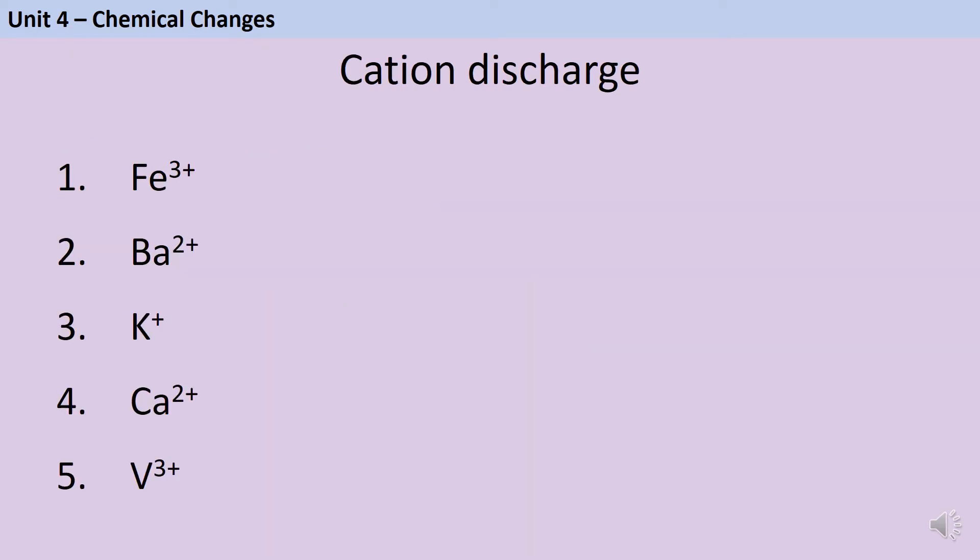For each one of these ions that's discharged, you need to be able to write something called a half equation. This is a type of chemical equation which shows us what has happened to one particular species. That means one particular element, as it switches between an ion and either an atom or a molecule. Now, for cations, this is really quite straightforward, because with one exception, they're going to be turning into atoms, and this makes our life a lot easier.